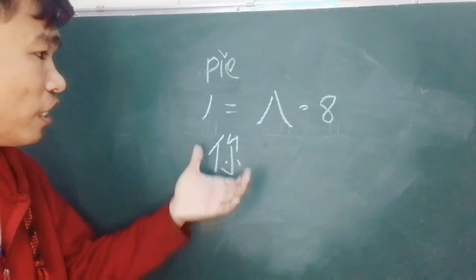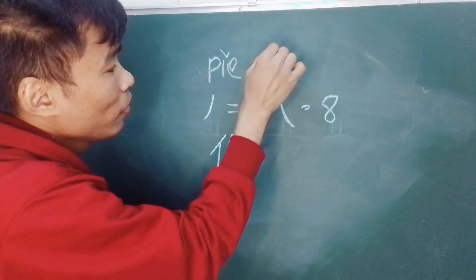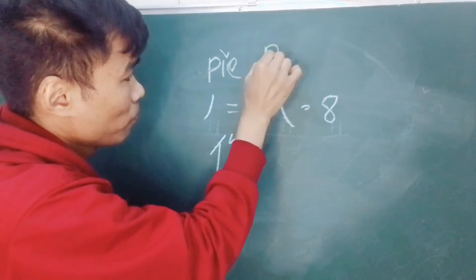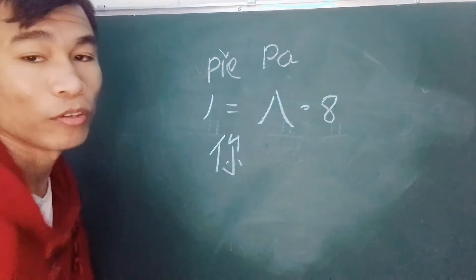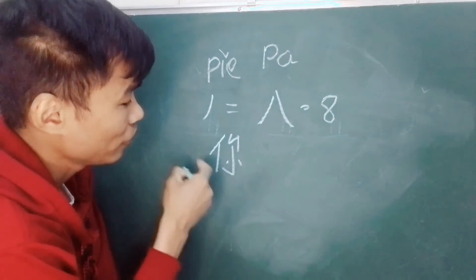I will show you another word. This one is ba. This one is called ba, it's number eight. Number eight is called ba.